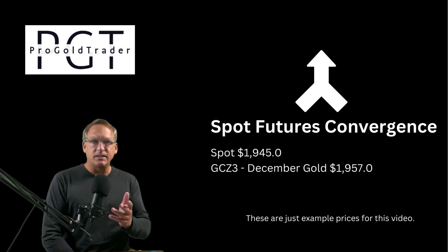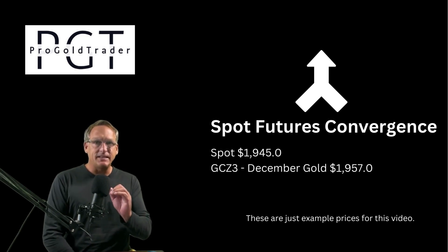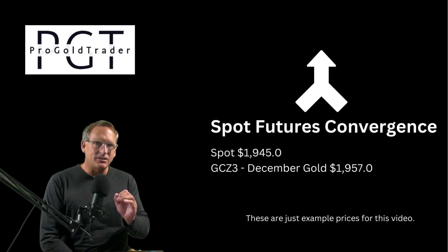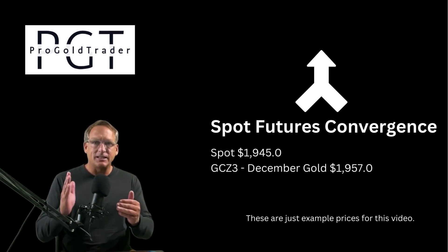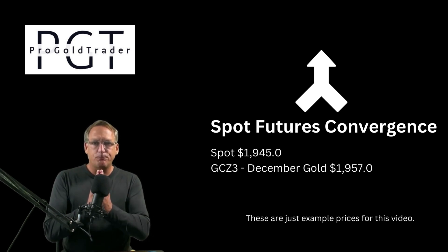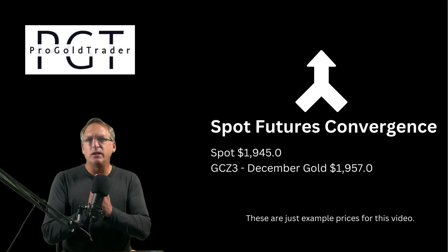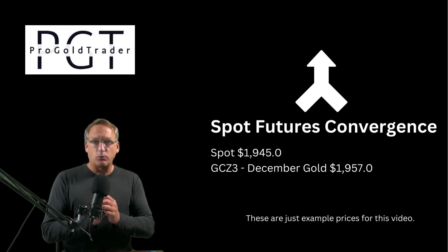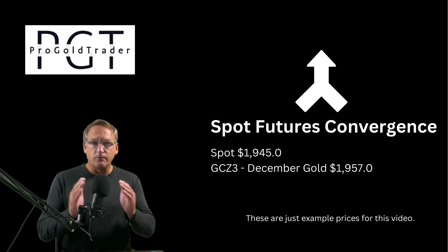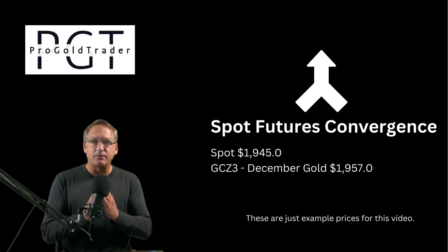In this example, you can see on the screen a spot price of $19.45 and the December contract at $19.57. Over time, as we get closer to December and that contract expires, the spot price of $19.45 and $19.57 will become one and the same. Right now there's a $12 contango; two weeks from now that contango will shrink by maybe $2 or $3, and as we continue to march toward the expiration date in December, they will converge into the same price.